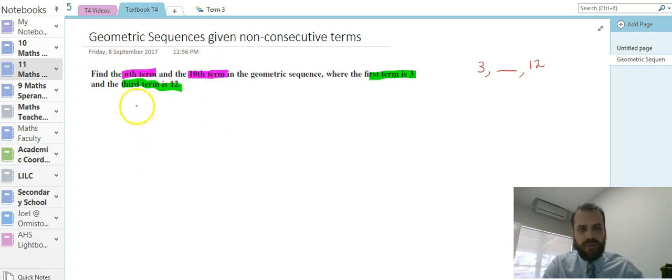So breaking this down, we've got our formula tn equals ar to the n minus 1. Now a represents the first value in a geometric sequence, and in this case we know that the first value is 3. So tn equals 3r to the n minus 1.